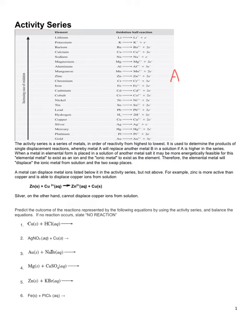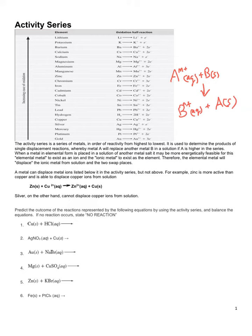So if we have some sort of metal A that's present as an ion in solution, and we have some metal B that's a solid, can we in essence knock B into solution so that it becomes an ion, and then A becomes a solid and falls out of solution? When a metal in elemental form is placed in a solution of another metal salt, it may be more energetically feasible for this elemental metal to exist as an ion, and the ionic metal to exist as the element.